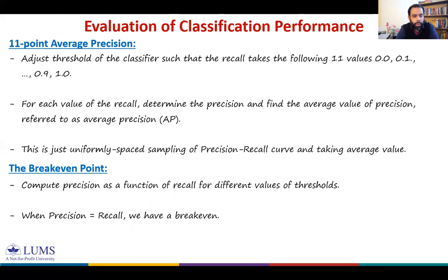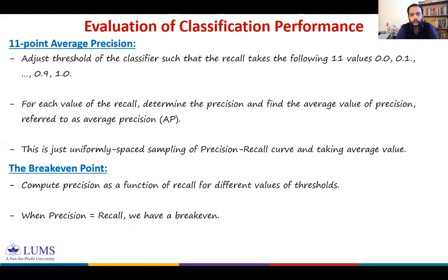So we stop here. So far we have talked about accuracy, then four quantities — true positive, true negative, false positive, false negative — and using these we defined the confusion matrix and other metrics such as recall, precision, and specificity. We saw the trade-off between these metrics and how to combine them into a single metric. That's all for the evaluation of a binary classifier. In the next video, I will introduce multi-class classification and different methods to evaluate a multi-class classifier, including what we mean by micro and macro averaging. See you in the next video, inshallah.